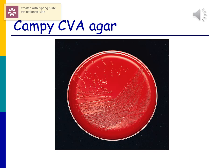Here is Campylobacter growing on the CVA Campy agar. Campylobacter tends to kind of flow together, so many times you don't see nice distinct single colonies. Instead, you see a runny-looking colony on the plate.